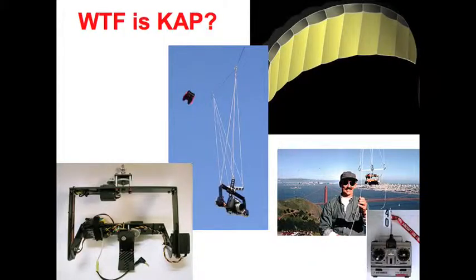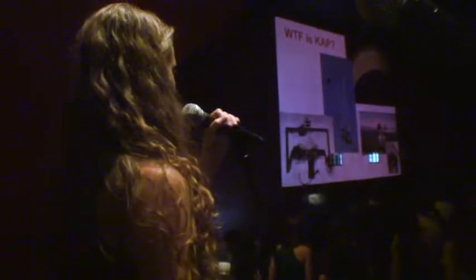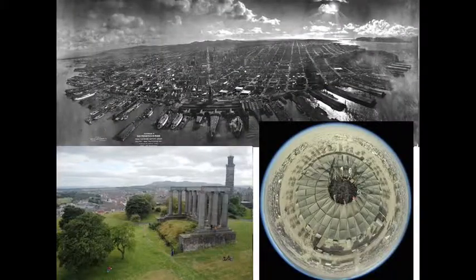So what is kite aerial photography, or KAP? You can see this guy controlling his KAP mechanism with a transmitter. It's controlled by little RC servos that do things like move the camera around and release the shutter, so you can take pictures from a bird's eye view. It's not a new idea — the picture on top here is from 1906 of San Francisco after an earthquake. Bottom left is from Scotland, and bottom right is actually a picture from Burning Man last year from a fisheye lens attached to a camera on a KAP rig.